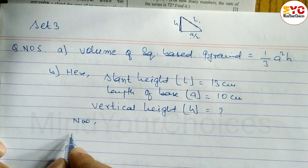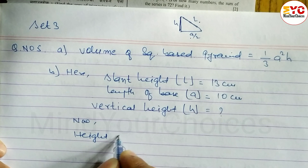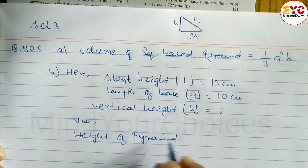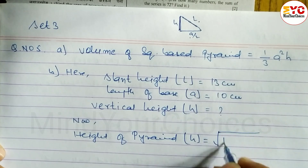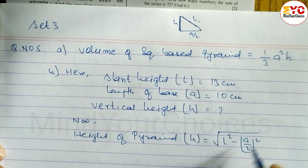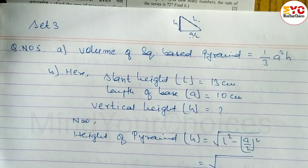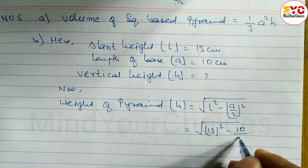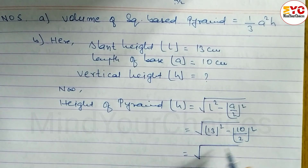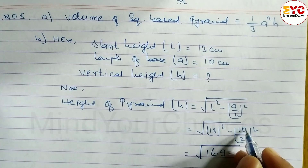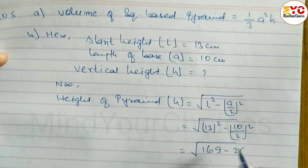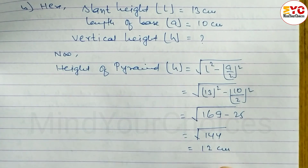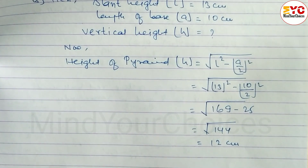Let's find out the vertical height of the pyramid. H is equal to root under L squared minus (a/2) whole squared. Substituting: root under 13 squared minus (10/2) squared, that is root under 169 minus 5 squared, which is root under 169 minus 25, equals root under 144, equals 12 cm. So the vertical height is 12 cm.